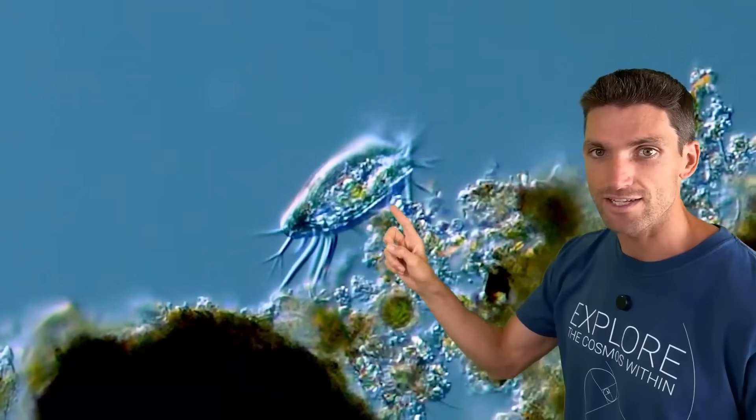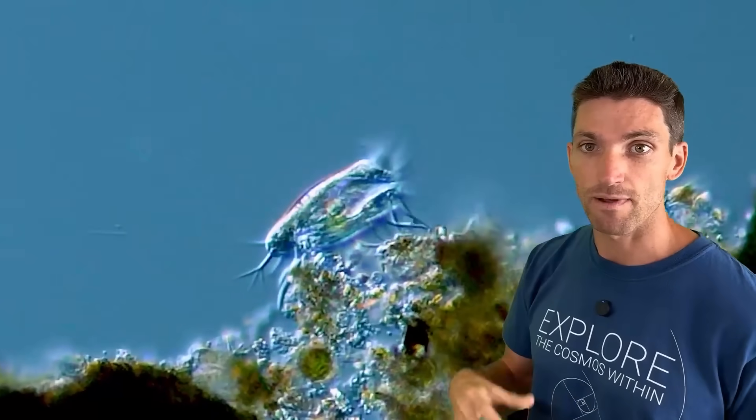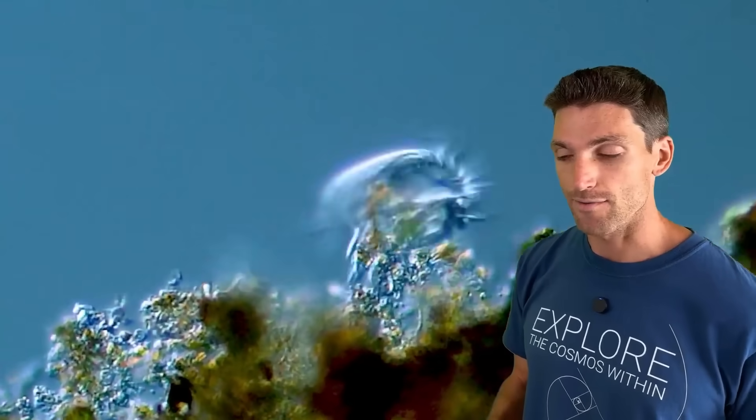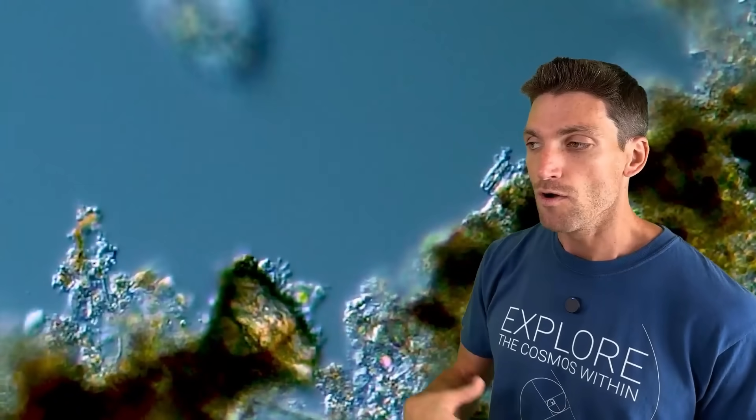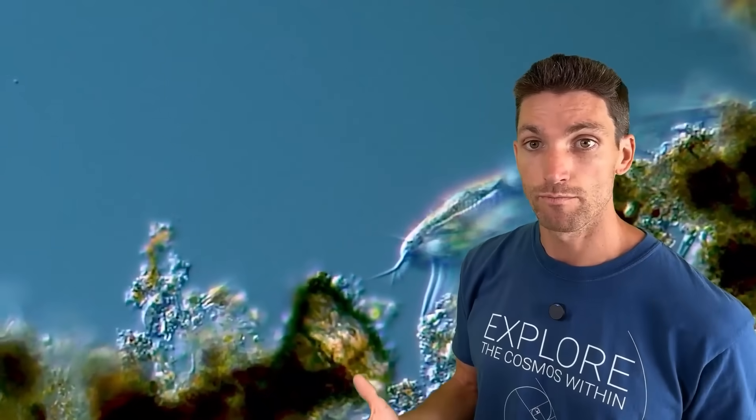And so if we have these sort of organisms down at this microbial scale and we have life on Earth as we know it, like humans walking around doing our thing, why couldn't there be one jump up to plasma organisms? That's a question that I have.